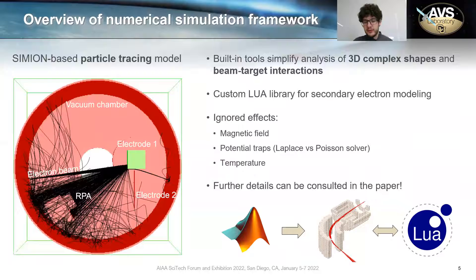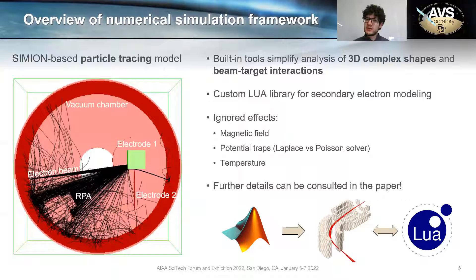In order to address this problem, what we have done is extending our previous two-dimensional results to 3D by making use of a SIMION-based particle tracing simulation software. SIMION is a standard for ion optics on Earth, but it turns out that it works very well also for our application because of several reasons that we describe in the paper. What we have needed to do is extend the capabilities of SIMION by means of custom LUA libraries. Those LUA libraries essentially implement all the physical effects related to the secondary electron modeling.